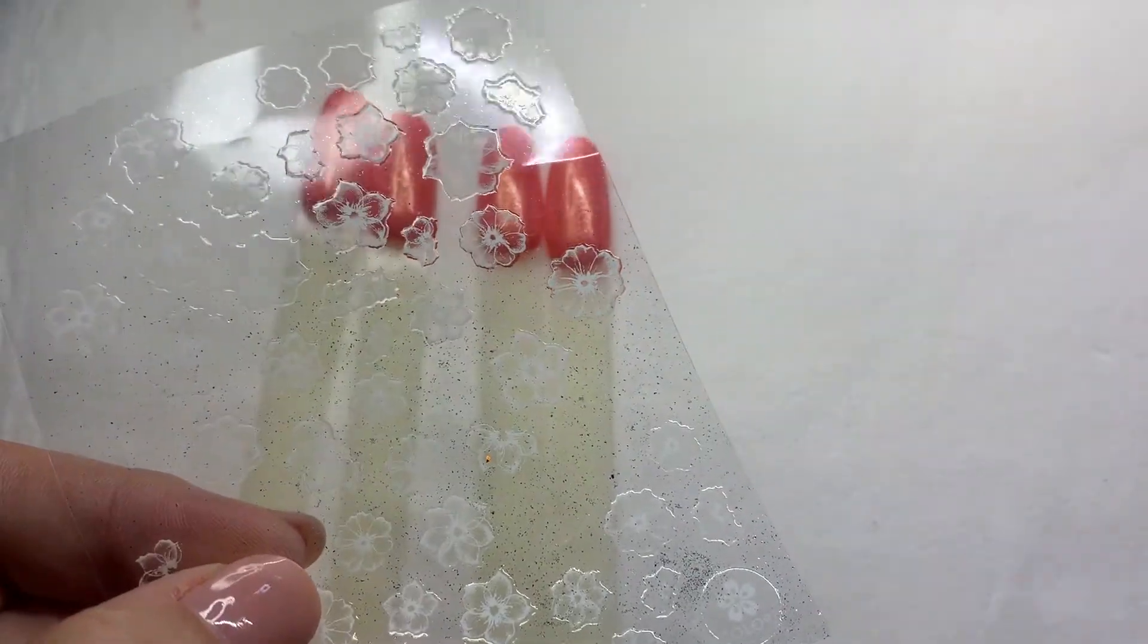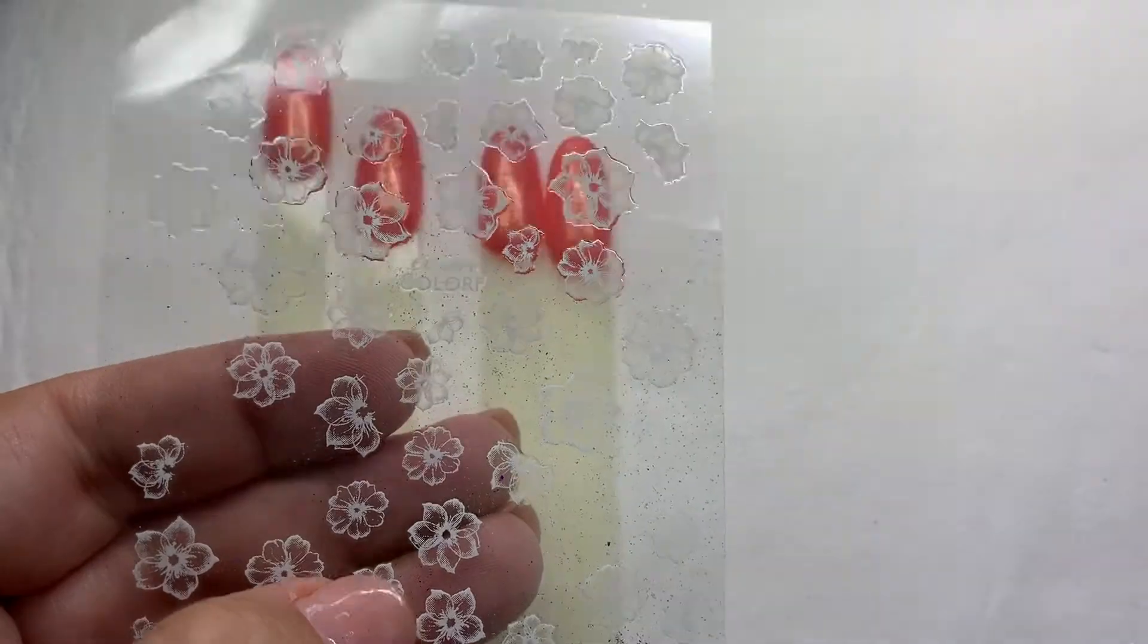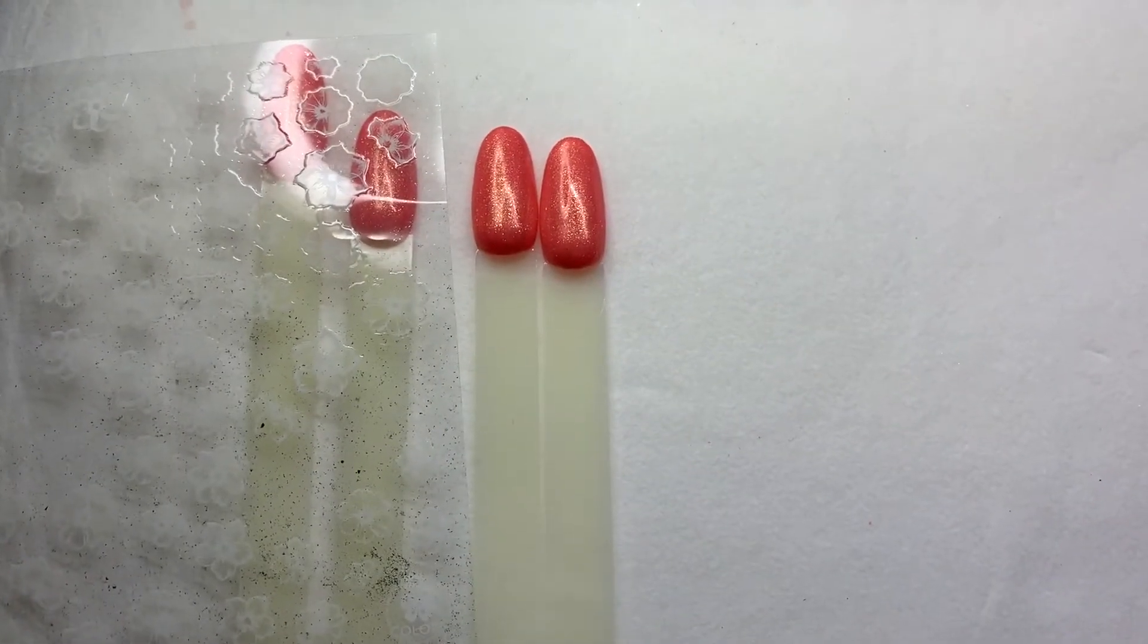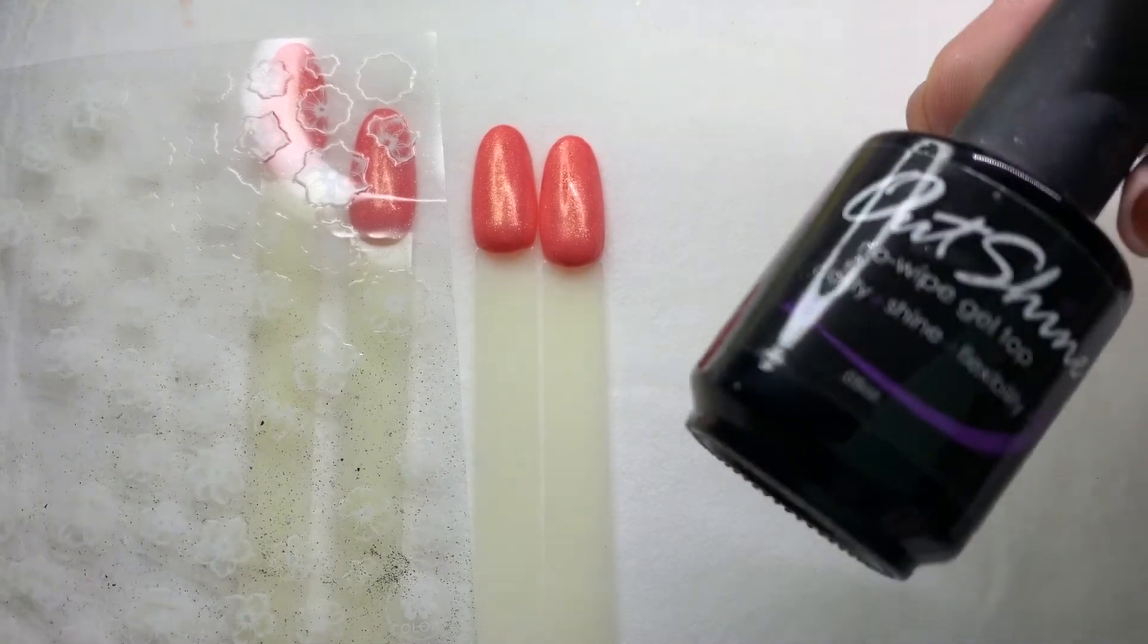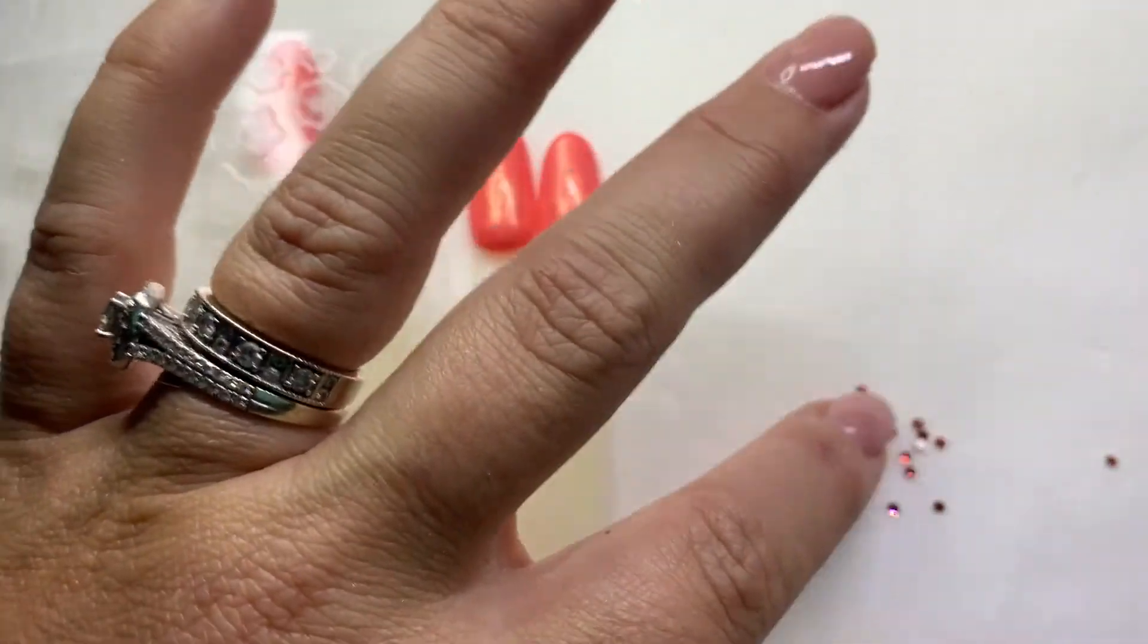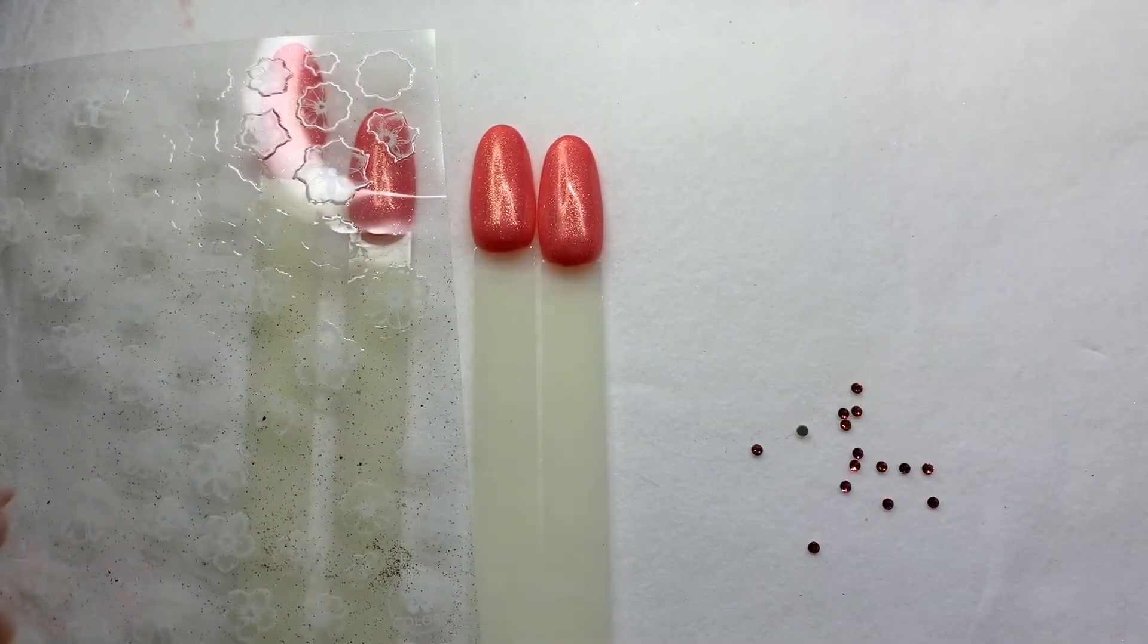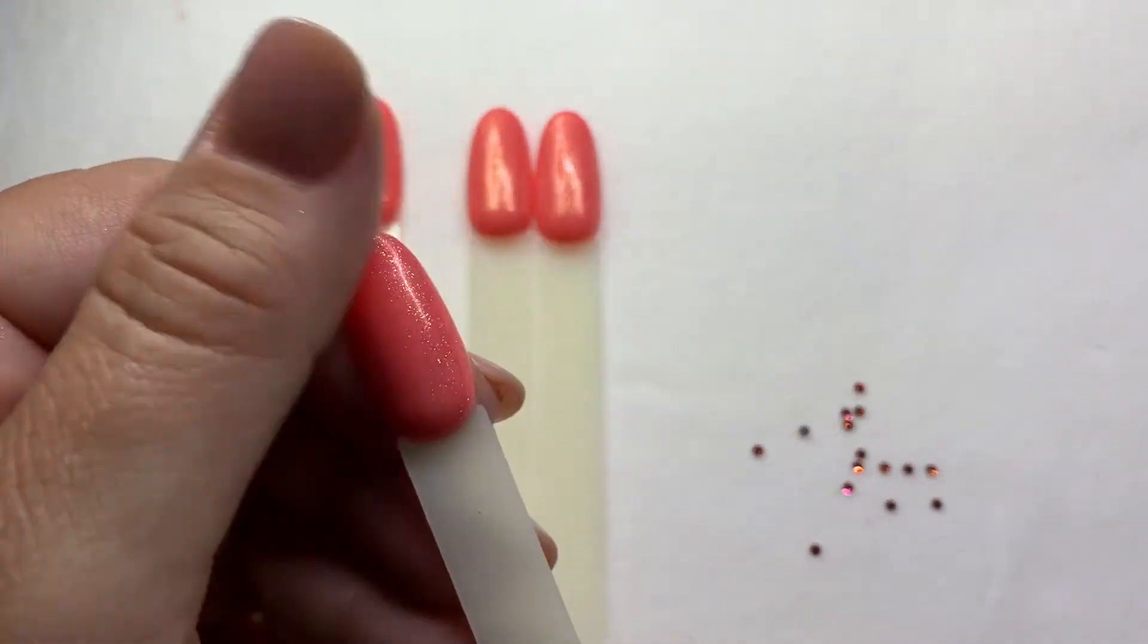And then we have a set of our new pasties. These are nail decals but they're a little bit more flexible, so they sit really nice and adhere well to your gel polish. And of course a bottle of Outshine because that's what we're going to use for our top coat and to adhere our Parasha SS5 Swarovski stones.